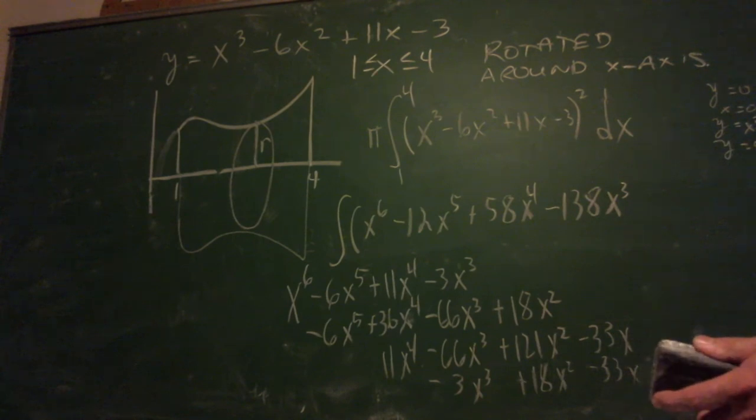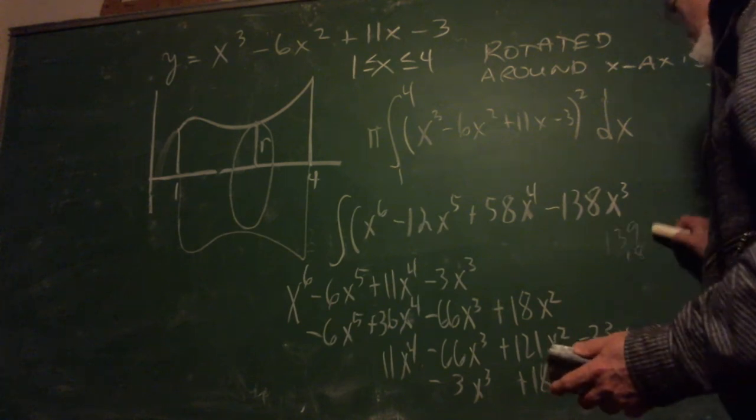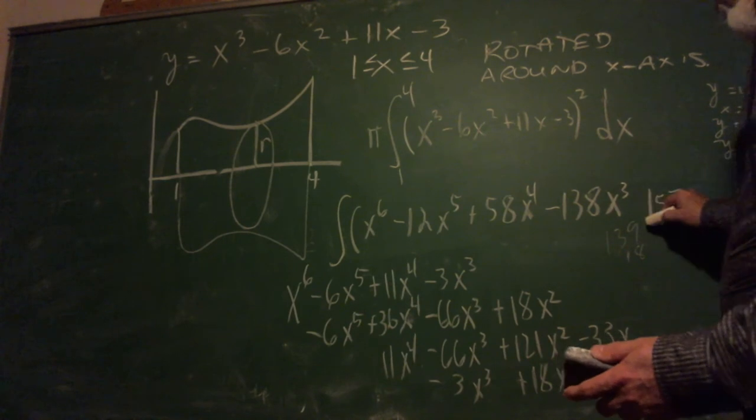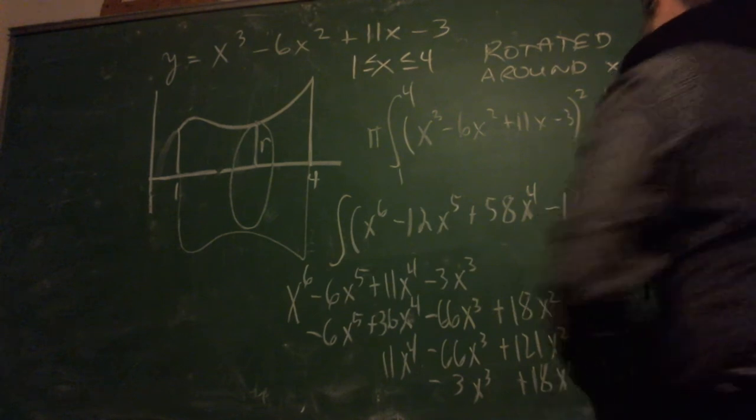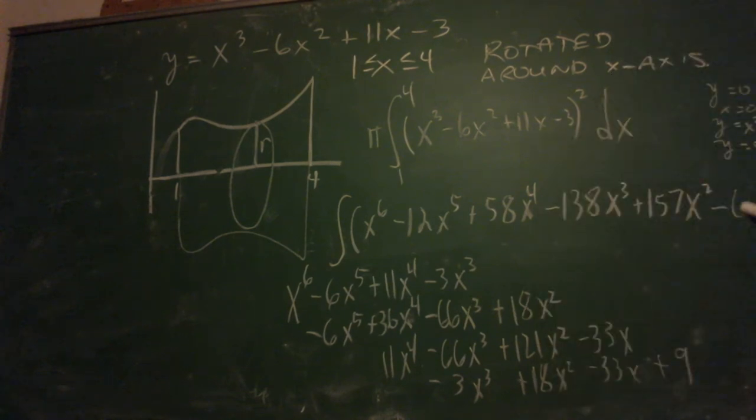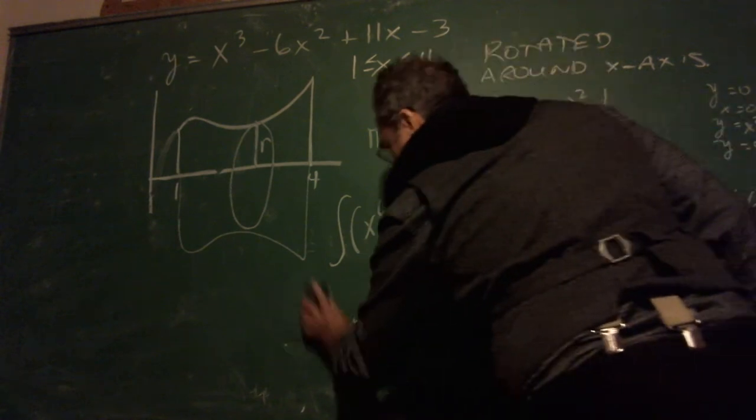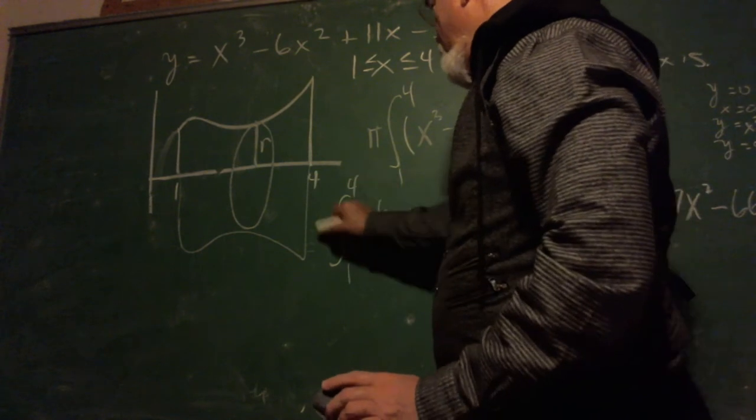157x squared, minus 66x, plus 9 dx. Ta-da! Let's pretend I did all those right.